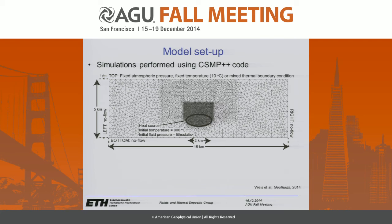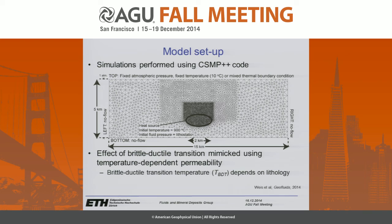Initially, this is at 900 degrees and fluid pressure inside the intrusion is lithostatic. A key feature of our simulations is that we adopt the formulation of Haiba and Ingebrigtsen 1994 of a temperature-dependent permeability to mimic the effect of the brittle-ductile transition.